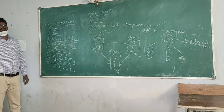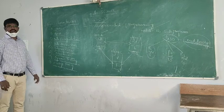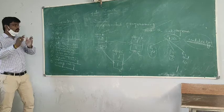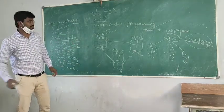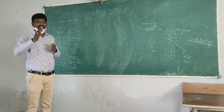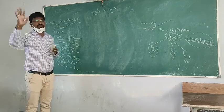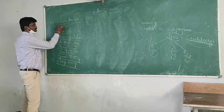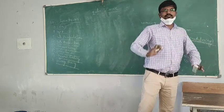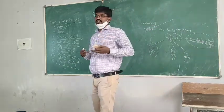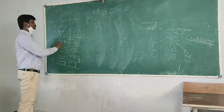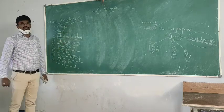What is the meaning of class? Class is a blueprint of an object that contains both data members and member functions. A class is also described as a collection or group of objects.